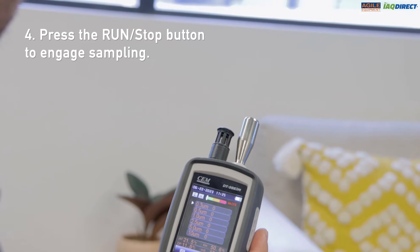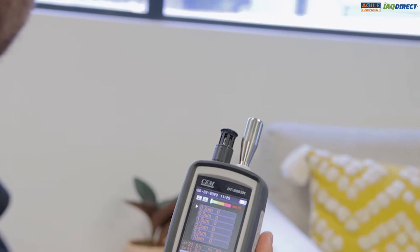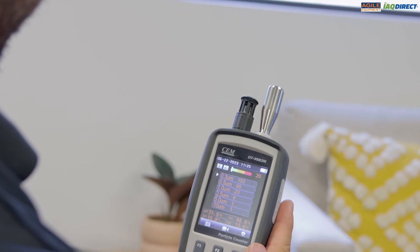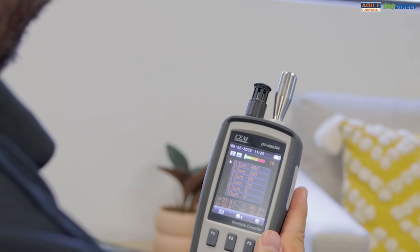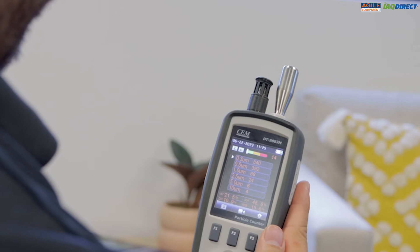Press the run stop button to engage sampling. As you can see, the meter starts counting in six different channels, from 0.3 microns all the way up to 10 microns.